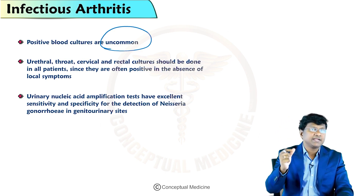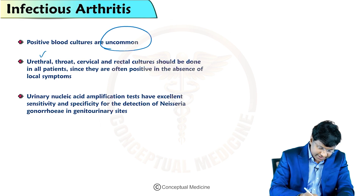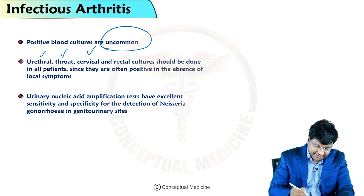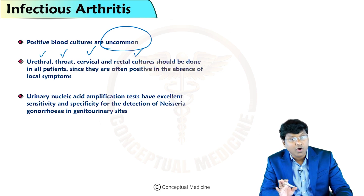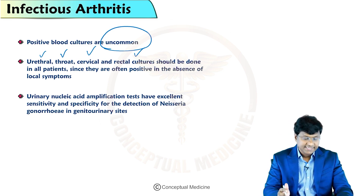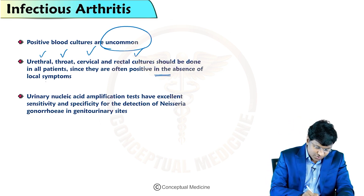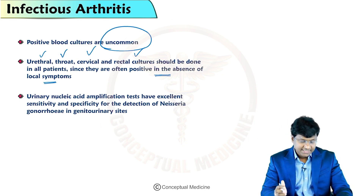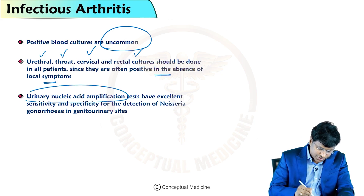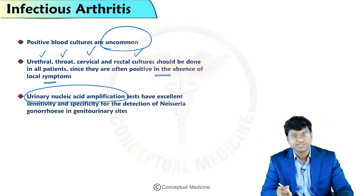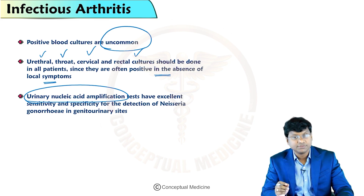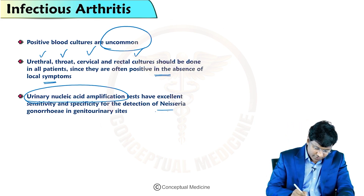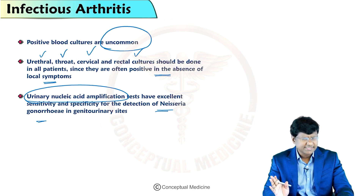Direct cultures from the urethra, throat, cervix, and rectum should be done in all patients, since they are often positive in the absence of local symptoms. Urinary nucleic acid amplification test (NAT) has excellent sensitivity and specificity for detection of Neisseria gonorrhea in genitourinary sites.